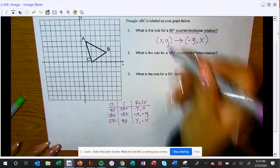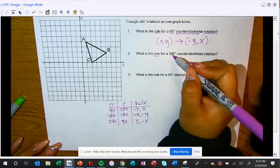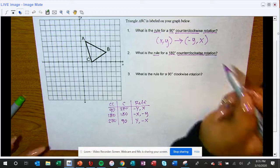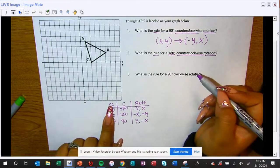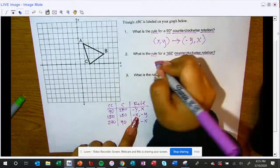Because all they're asking me for is the rule. Here they're asking me for the rule of a 180 degree counterclockwise rotation. So again I'm looking at counterclockwise 180, and here's my rule: X comma Y arrow to negative X comma negative Y. You're done, that's your answer.